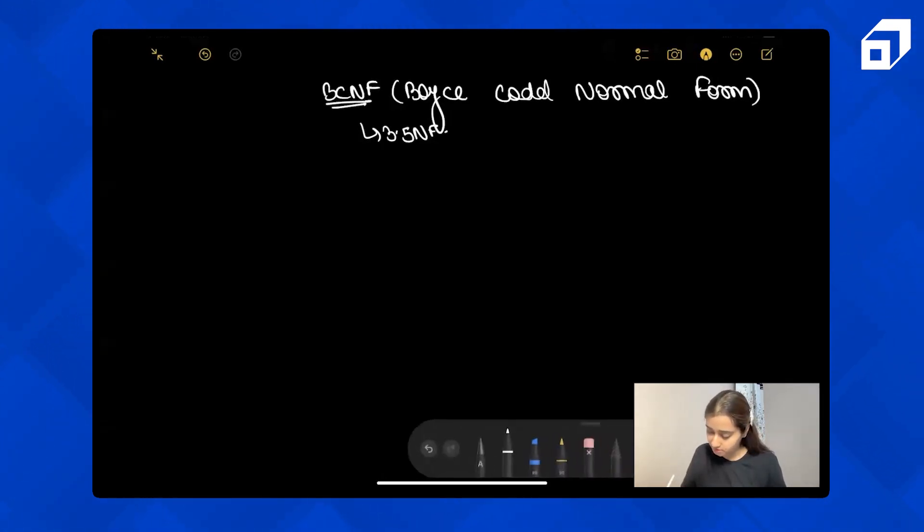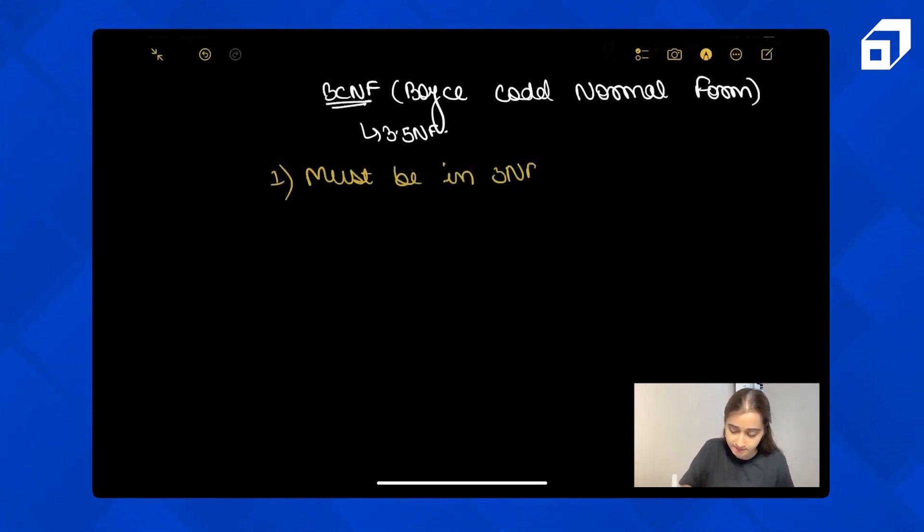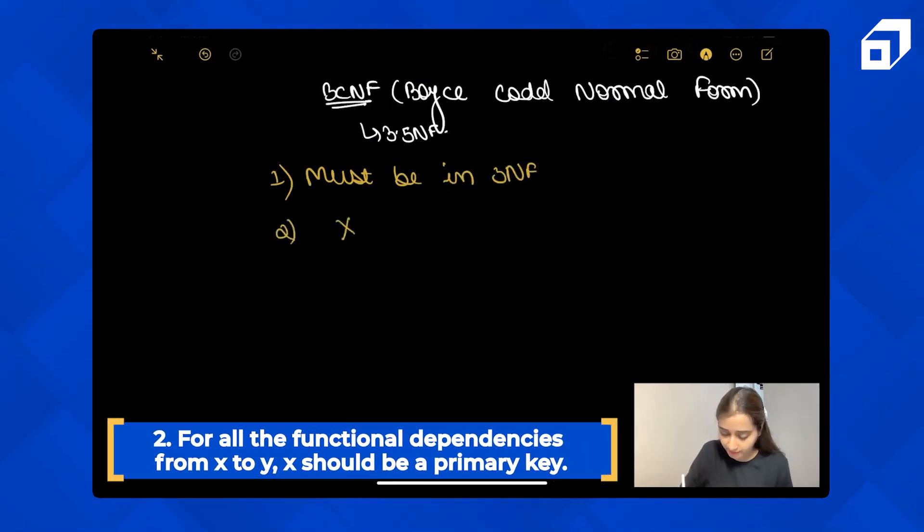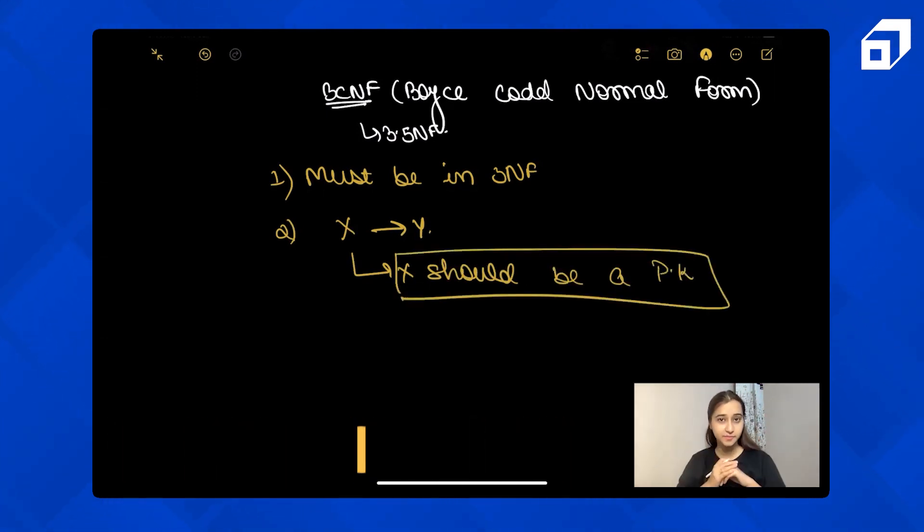The first condition is it must be in 3NF. The second condition is for all the functional dependencies from X to Y, X should be a primary key. That's it. So it's even more stricter than 3NF, right? It just says that X should be a primary key.